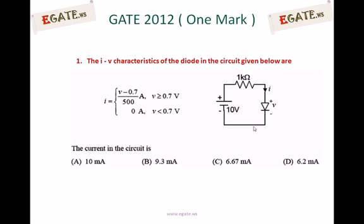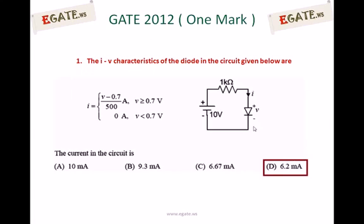I am reading the question again. For the given circuit with the diode I-V characteristics, find out the current flowing through the diode. So the right answer for this one is 6.2 mA. We will see how we are getting 6.2 mA for this one.